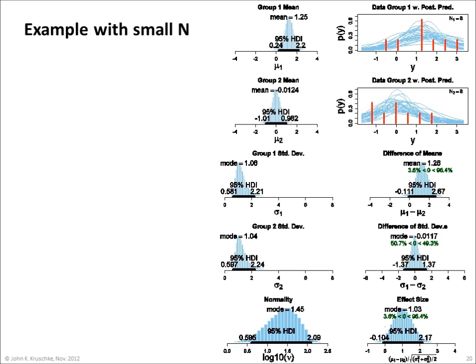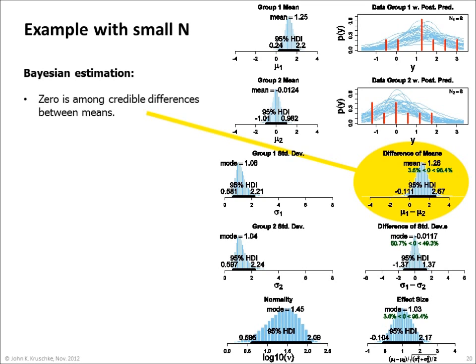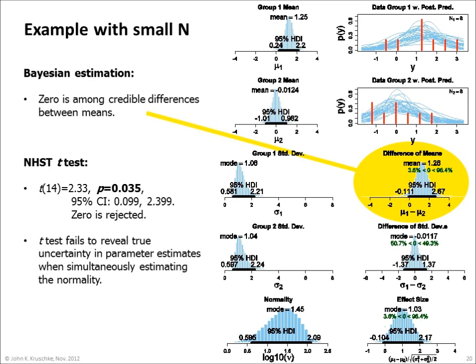Here's an example with small sample sizes — only eight in each group — as shown in the red histograms in the upper right of this figure. Bayesian estimation shows that a difference of zero is among the 95% most credible differences between means. The classical t-test, on the other hand, says p equals 0.035, which implies that zero should be rejected. In this case, the t-test fails to reveal the true uncertainty in the parameter estimates when simultaneously estimating the normality of the data.